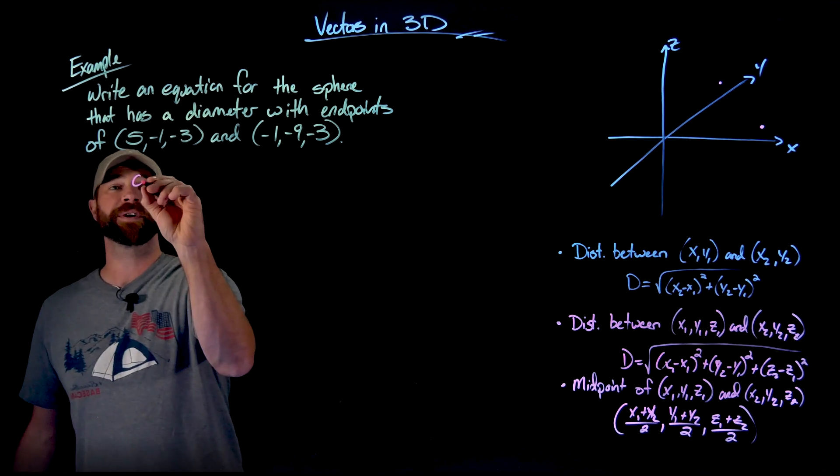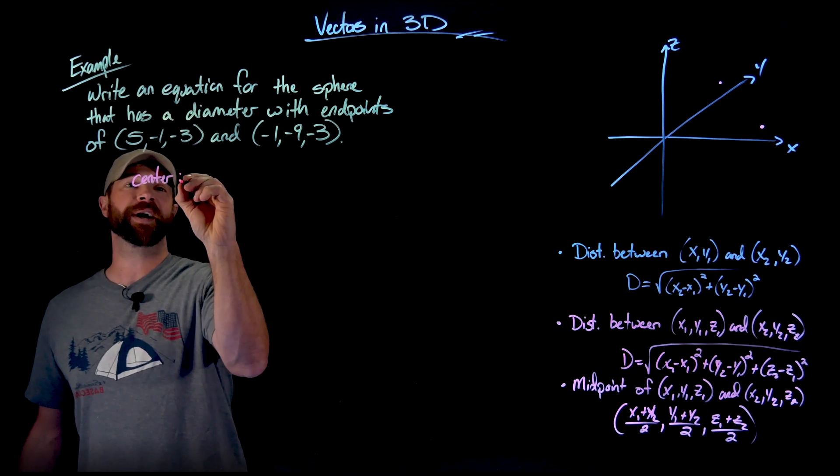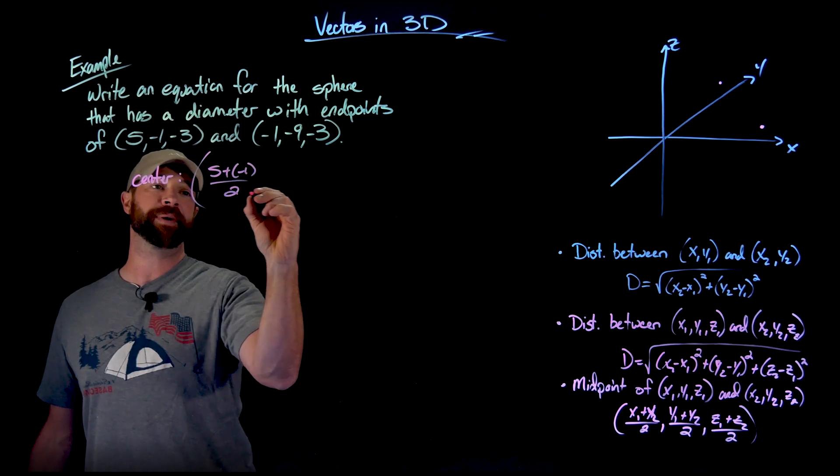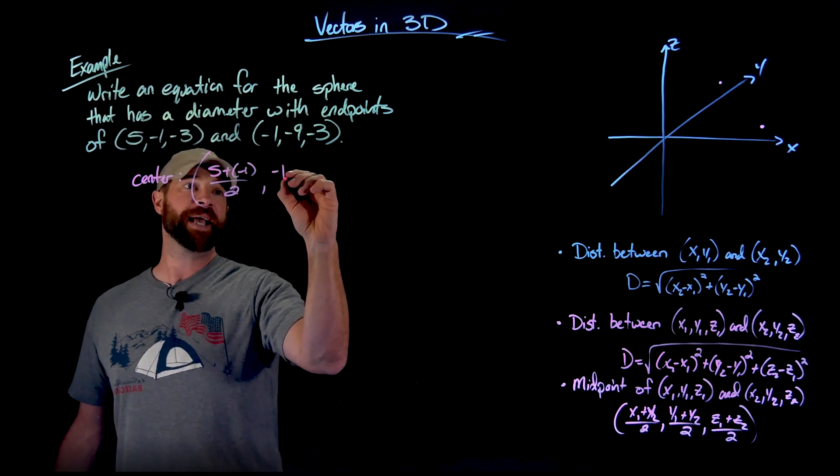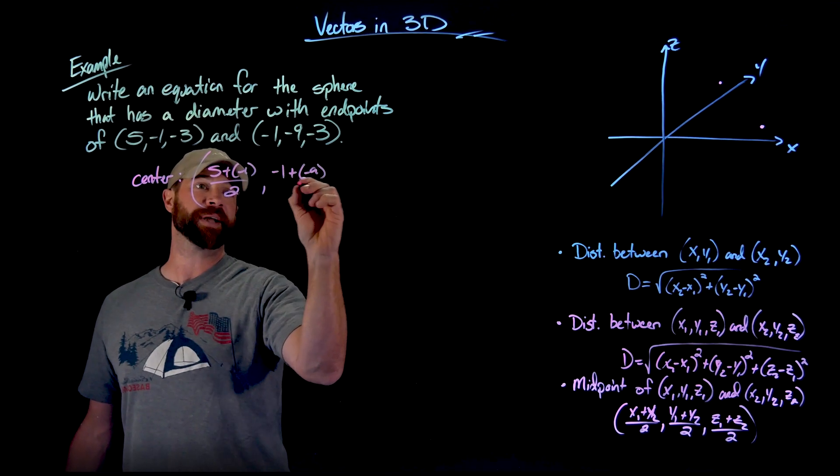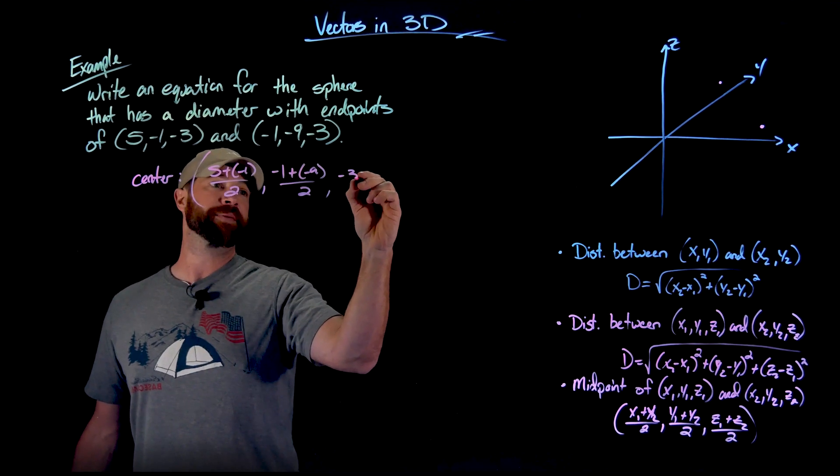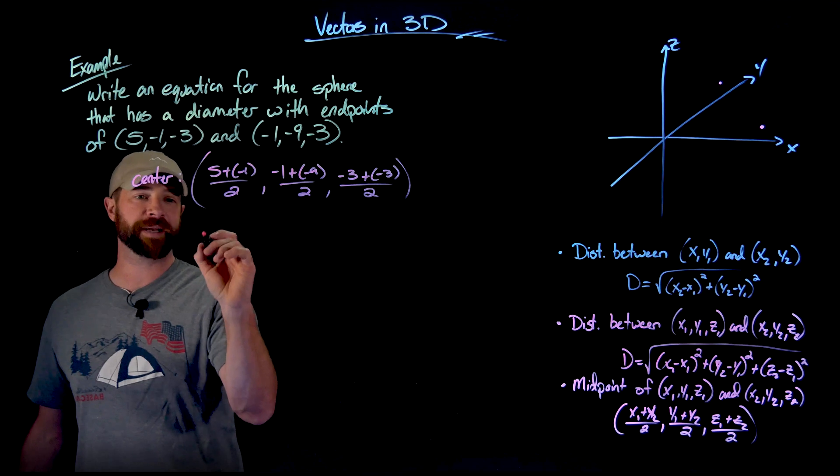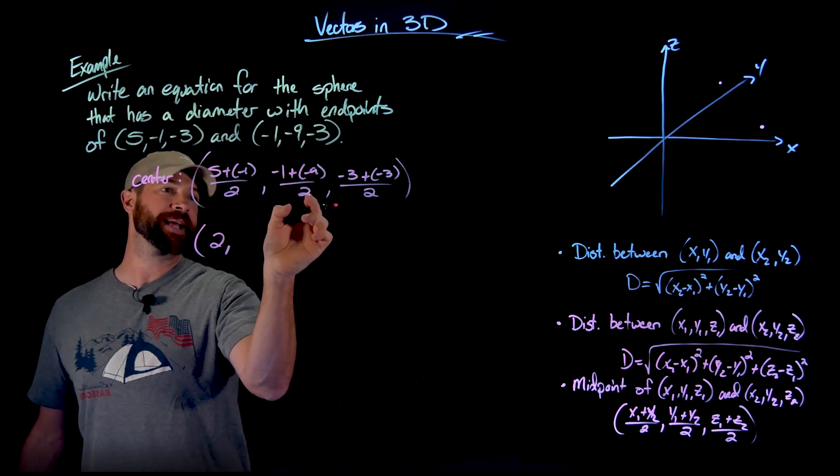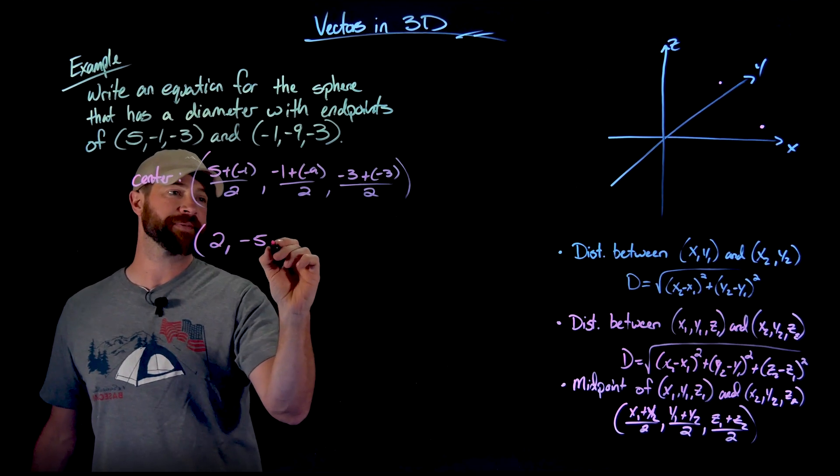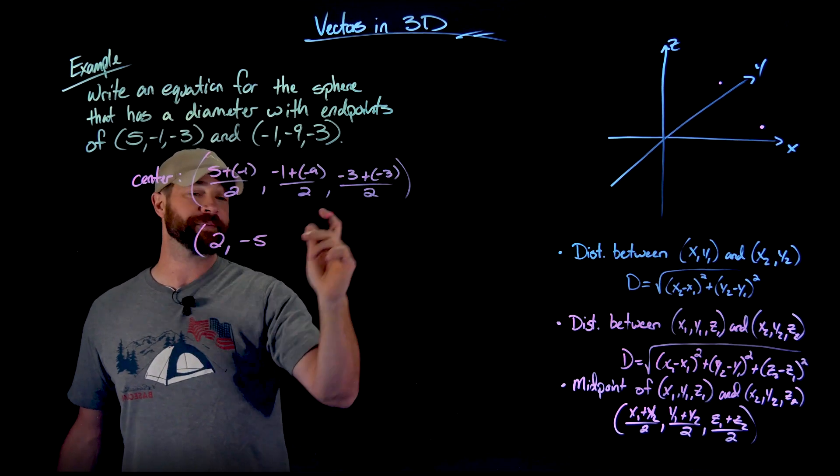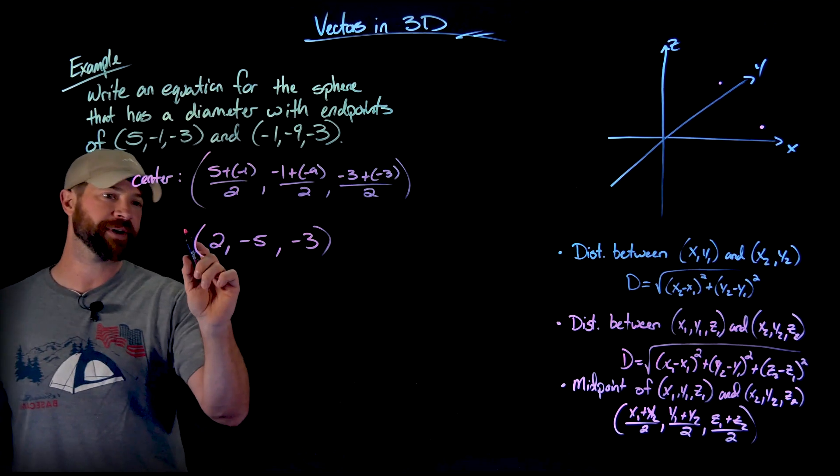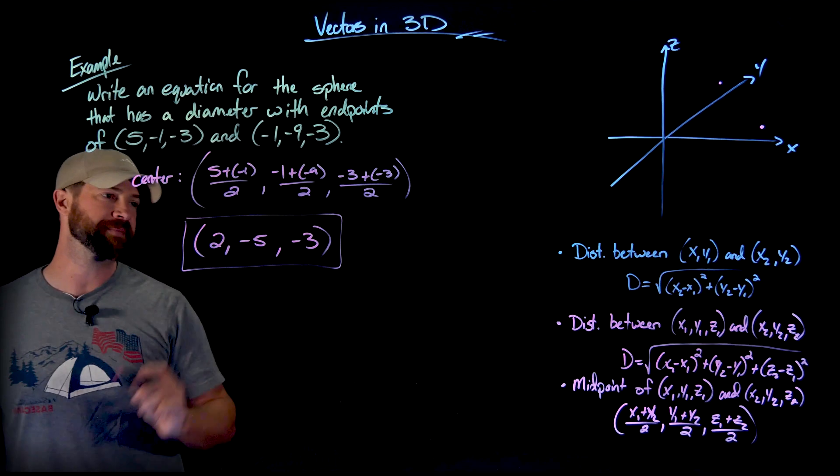The midpoint of this is 5 plus negative 1 divided by 2. Again, just the average of all of these, negative 1 plus negative 9 divided by 2, and negative 3 plus negative 3 divided by 2. Easy math here is 4 divided by 2 gives me 2. This is negative 10 divided by 2 gives me negative 5. And actually, since these are both the same, the average is the same, or negative 6 divided by 2 gives me negative 3. So here we have our center, which is the first bit of business that we need to do.